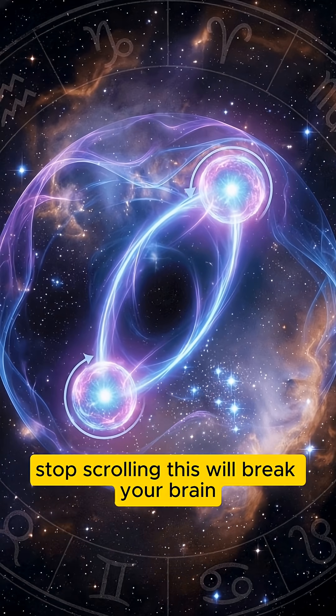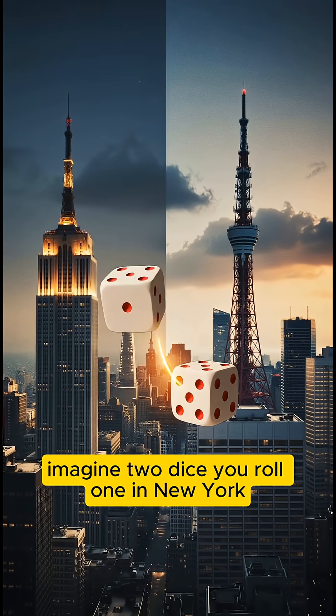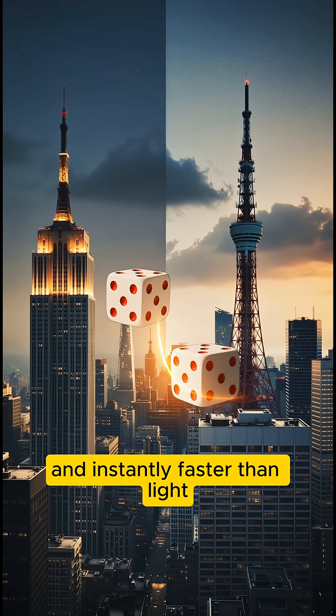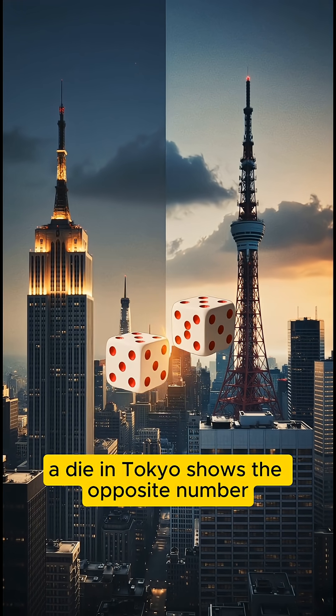Stop scrolling. This will break your brain. Imagine two dice. You roll one in New York, and instantly, faster than light, a die in Tokyo shows the opposite number.